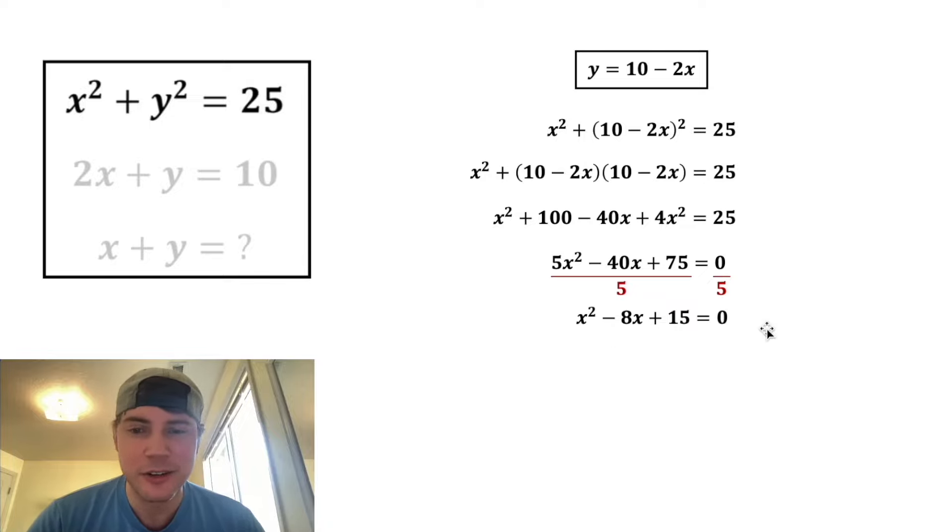And now to solve this, we want to factor. We want two numbers that will add to negative 8 and multiply to positive 15. Well, negative 3 plus negative 5 will give us negative 8, and negative 3 times negative 5 will give us positive 15. So these are the factors of this.